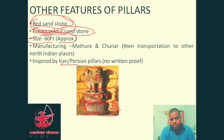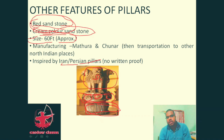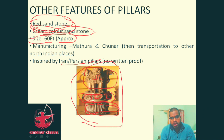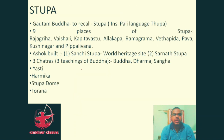Though there is no written proof, it is believed that the Asokan Lion Capitals were inspired by Iranian or Persian pillars. However, no definitive written evidence confirms this connection.